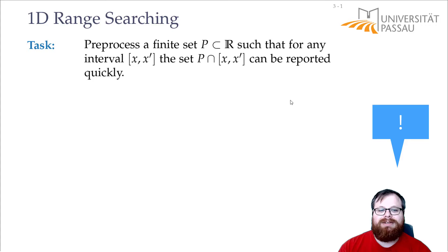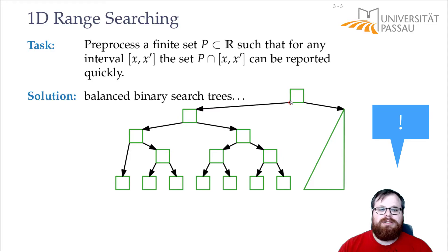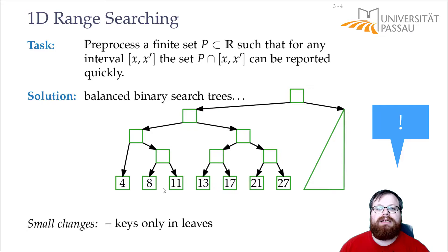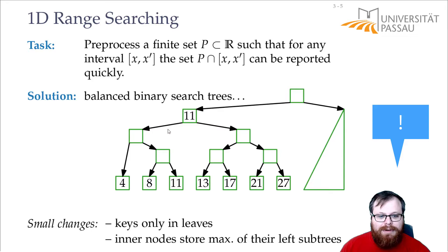The way we can do this is using the standard geometrical data structure, the balanced binary search tree. So take all our keys, every point is just a key, and place it on some balanced binary search tree, but we do one slight modification that helps us later to extend it to higher dimensions. We only store the elements in the leaves.